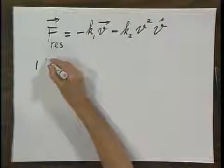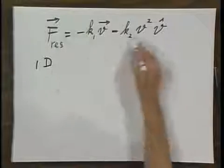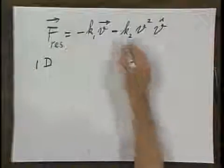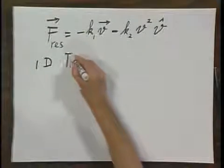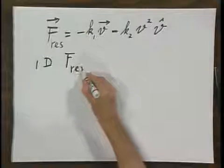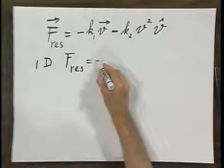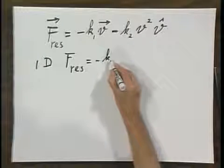Now if we deal with one dimensional situations, then in general we simplify this a little, and so we then write that the resistive force equals minus K1 times V.